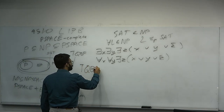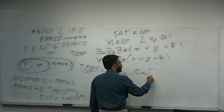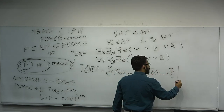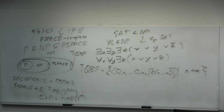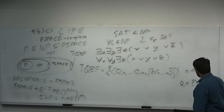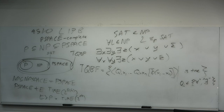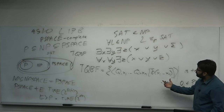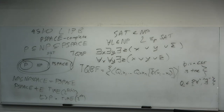The formal definition of TQBF — True Quantified Boolean Formula — is an encoded Boolean formula Q1 X1 ... Qn Xn phi(X1,...,Xn) such that the whole thing is true. Each variable is either universally or existentially quantified, and the internal phi is a CNF formula. Each Qi is either the existential or universal quantifier.